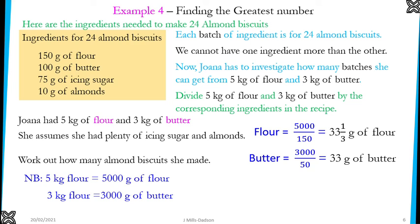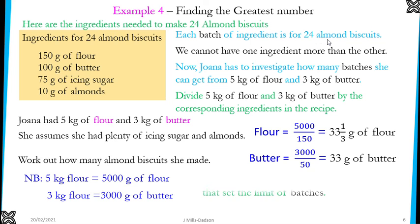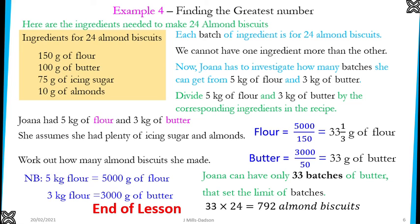After 33 batches, butter will be used up. There is a little flour left, so the limit is set by butter. The smallest number is 33, so after 33 batches you have no butter and cannot continue. Therefore 33 is the batch at which you stop. Each batch creates 24 almond biscuits, so to work out the total: 33 times 24 means she can create 792 almond biscuits.